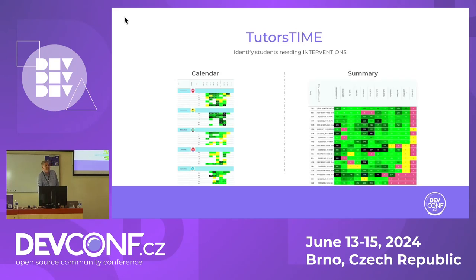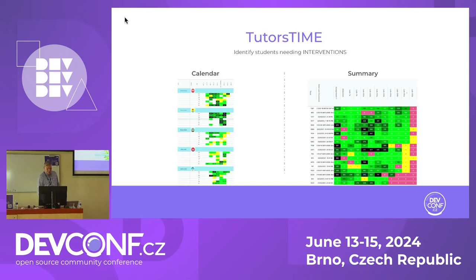We've seen great success with this — we brought the average retention rate up from around the 45% industry average to 85%, just by using this. You can roll all of that up into a summary for the class. Black means spending lots of time; red means no time spent. If you sort it, you can see who's falling behind. So you can make interventions for people spending too much or too little time.